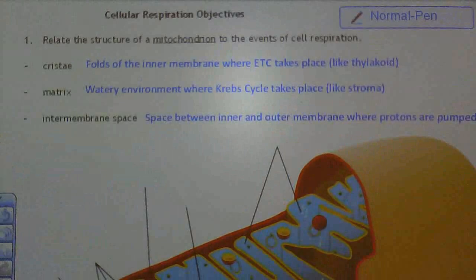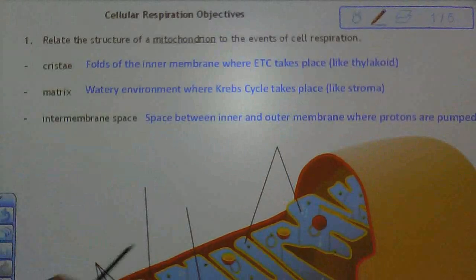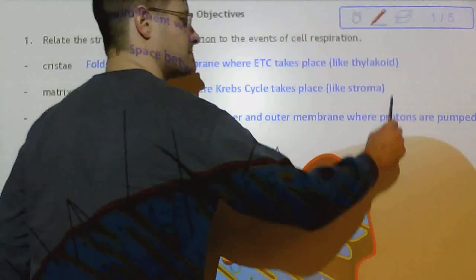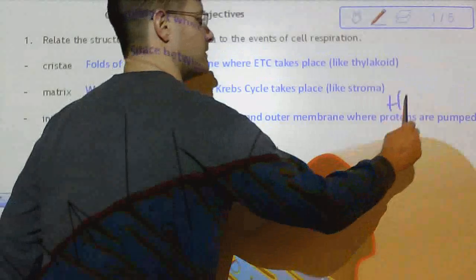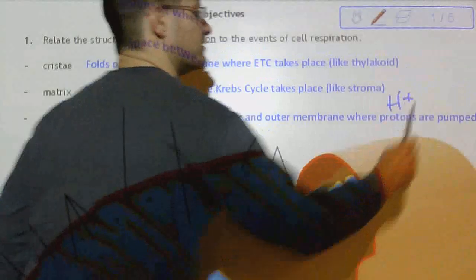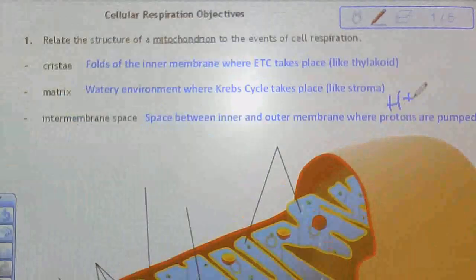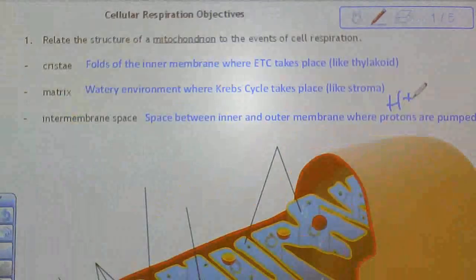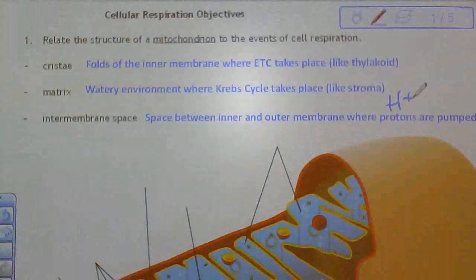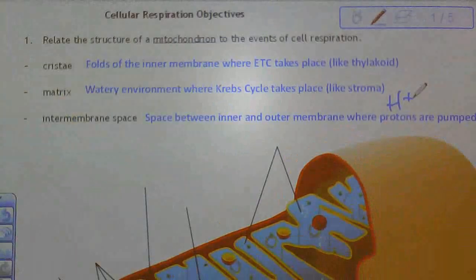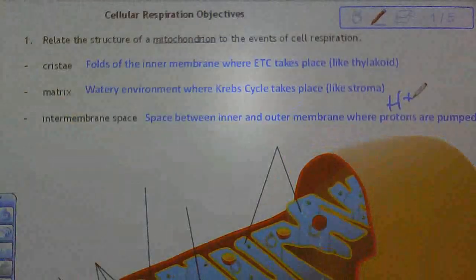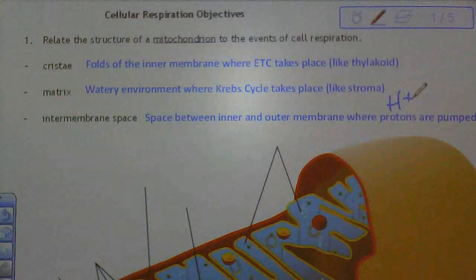Last up is the intermembrane space — that is the space between the inner and outer membrane where protons are pumped. Remember, proton can be abbreviated as H+. Just like in photosynthesis, we're going to see a lot of things that are very similar from our last unit to this unit.